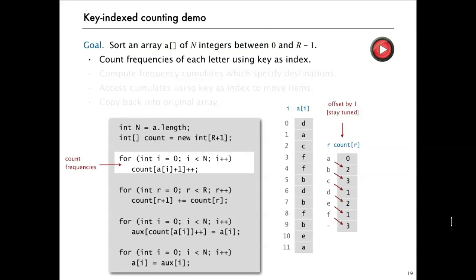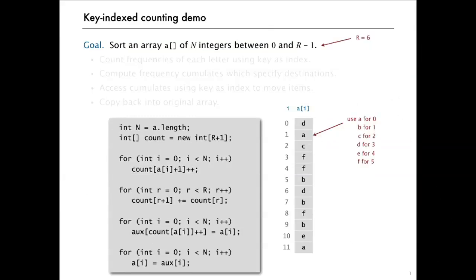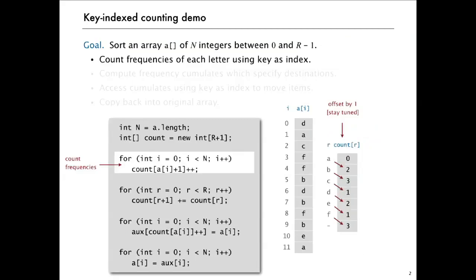So here's the code for this method called key indexed counting, and let's look at a demo. So here's the key indexed counting demo. Now, to make this a little less confusing and not so many numbers, we're going to use lowercase a for zero, b for one, c for two, and something like that. So it's a minus first letter of the alphabet. And we're only going to look at six. So we're supposing that we're sorting this array that has six different small integers, and we're using lowercase letters to represent the integers so that we can easily distinguish between the keys and the indices.